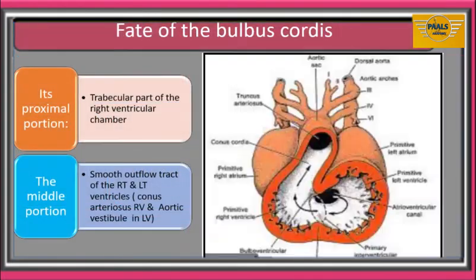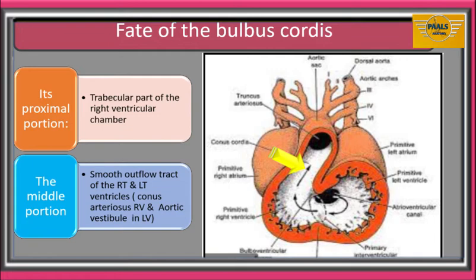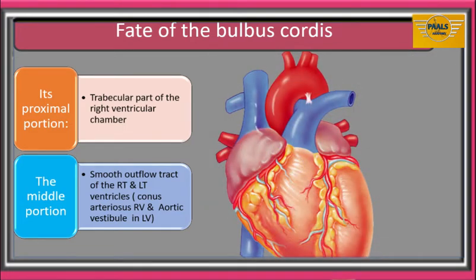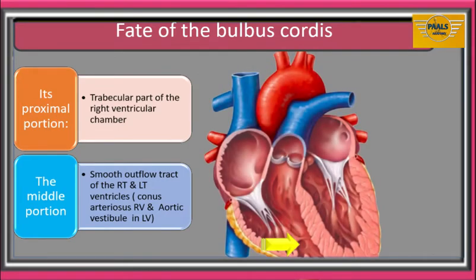Looking at the fate of the bulbus cordis: its proximal part will form the trabecular part of the right ventricular chamber. The middle portion of the bulbus cordis forms the smooth outflow tract of the right and left ventricles — that is, the conus arteriosus or infundibulum in the right ventricle and the aortic vestibule of the left ventricle. In the fully developed heart, here is the conus arteriosus or infundibulum of the right ventricle, and here is the smooth outflow tract or infundibulum from the middle portion of the bulbus cordis.